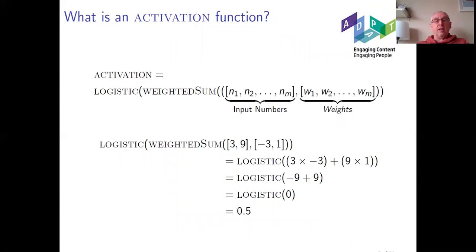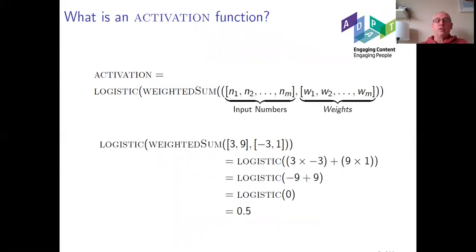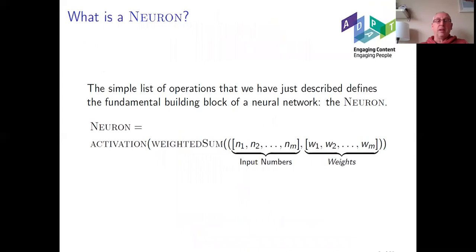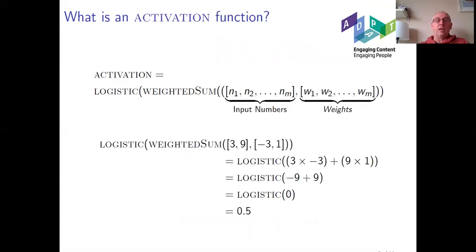If we apply the weighted sum to the numbers we've just seen and look them up on the graph — going back to the previous slide — the output from the logistic function is zero. Then going back to the graph, we follow the x-axis up to zero, read off the y value, and we see 0.5. The application of the two functions gives us the output score of 0.5 for that particular weighted sum function, with the logistic function applied to the output.